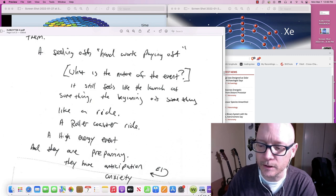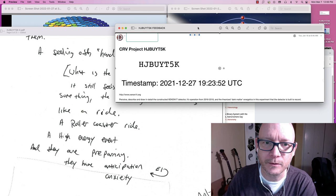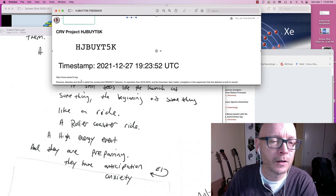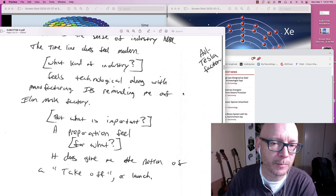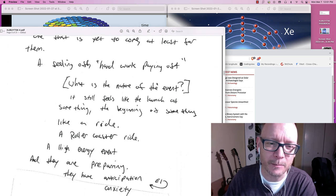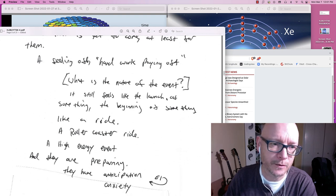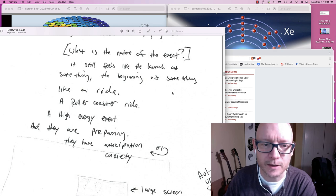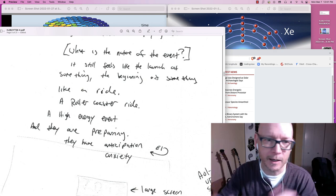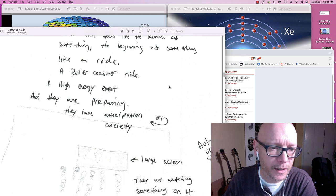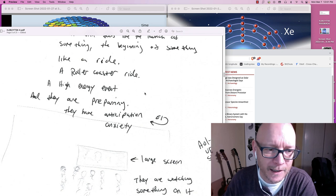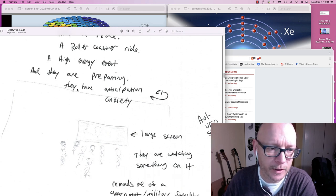See now, as I'm going along in this, I want to keep in mind that for the tasking here. Per the tasking, I was looking for the ranges between 2016 and 2018. So right here, my assessment of my session is that I'm at the beginning of when they were going to begin these experiments. Since the tasking did put that time frame in there. What is the nature of the event though, I wonder? It still feels like the launch of something. The beginning of something. Like a ride. A roller coaster ride. A high energy event. And they are preparing. They are anticipating. And an aesthetic was that there was some anxiety about it.